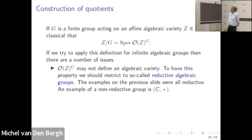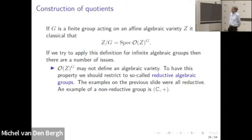If G is an algebraic group, the invariant ring may not be finitely generated. So we have to restrict to so-called reductive groups. There are many definitions of reductive groups — one is that the category of representations should be semi-simple. More interestingly, an example of a non-reductive group is the additive group of the complexes, which is non-reductive.